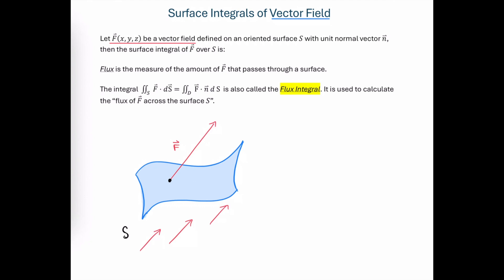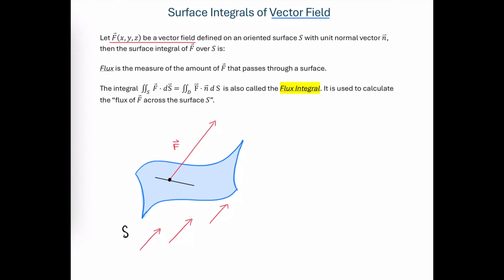What we're after is the amount of this force that is perpendicular to the surface. Let's consider a line that is in the tangent plane to the surface at this point, and we can decompose this force vector into two components: one is the component of force acting perpendicular to that tangent plane, and the other is acting in the direction of that tangent plane — the normal component and the tangential component of the force vector.